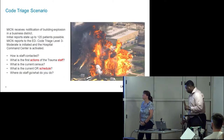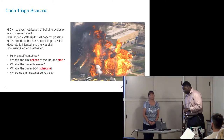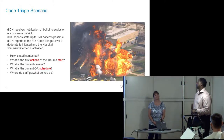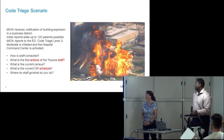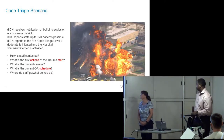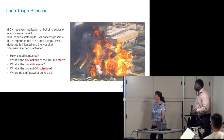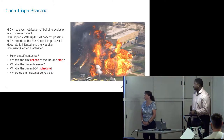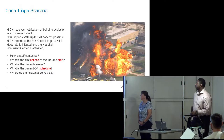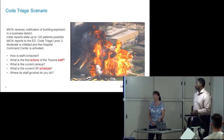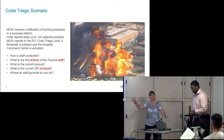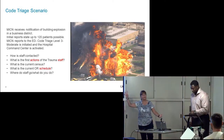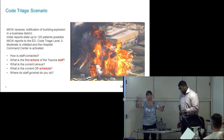Here's a Code Triage scenario: The MICN receives notification of a building explosion in a business district. Initial reports state there are up to 120 possible patients. The MICN reports to the ED and calls a Code Triage Level 3 Moderate. It is initiated at the hospital command center. There are only four levels, and the next one up is High — so a Level 3 is a significant event.